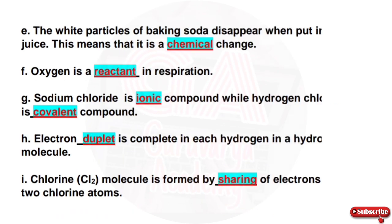Fifth, the white particles of baking soda disappear when put in lemon juice — this means that it is a chemical change. That means that oxygen is a reactant in respiration. Next, sodium chloride is an ionic compound while hydrogen chloride is a covalent compound. Electron duplet is complete in each hydrogen in a hydrogen molecule.